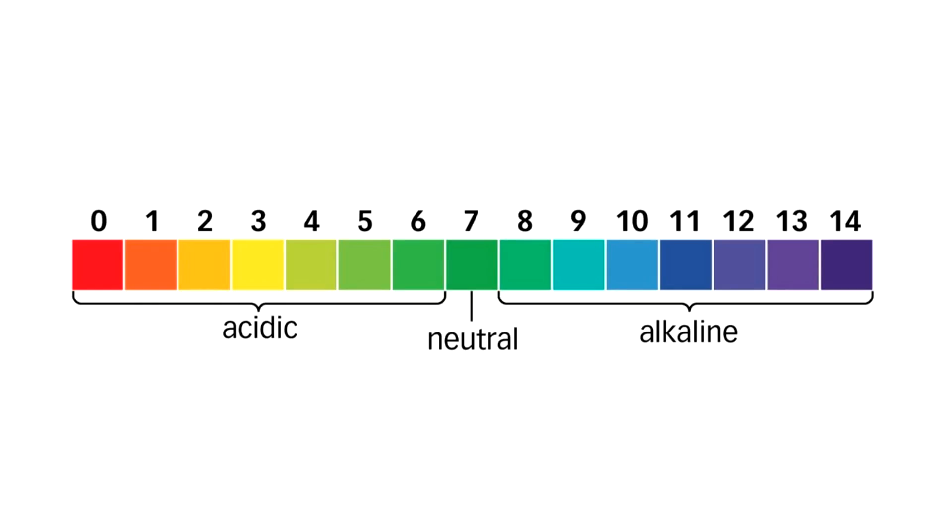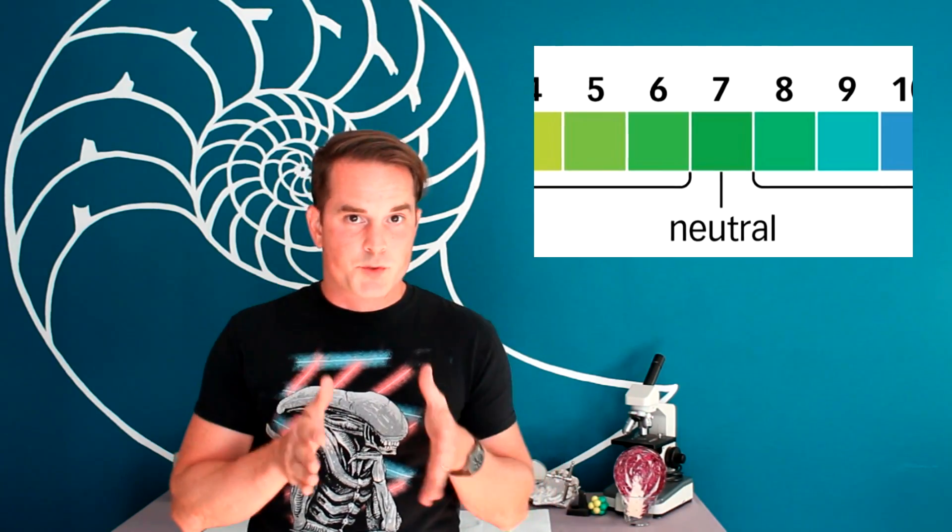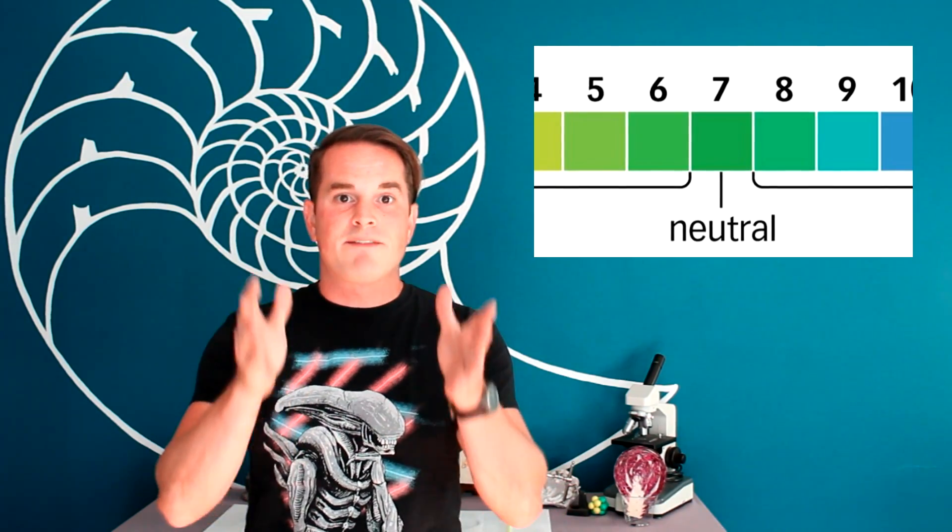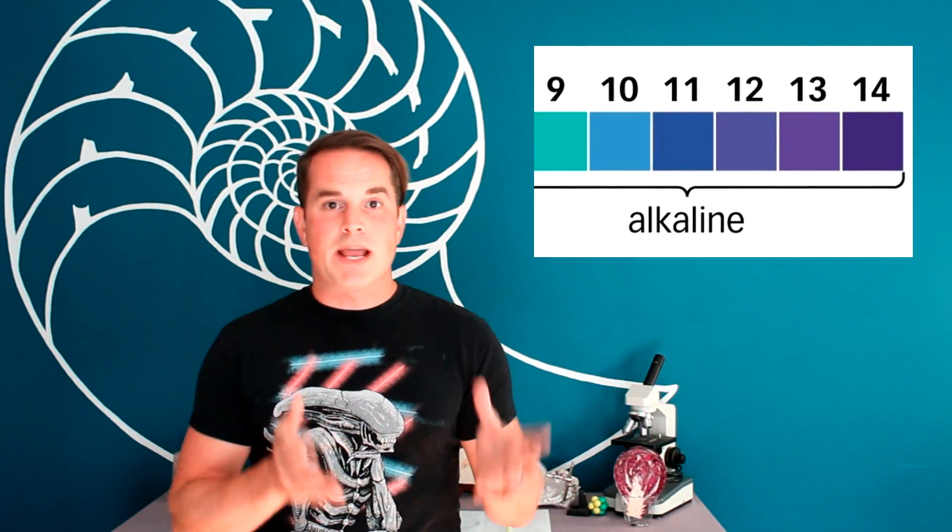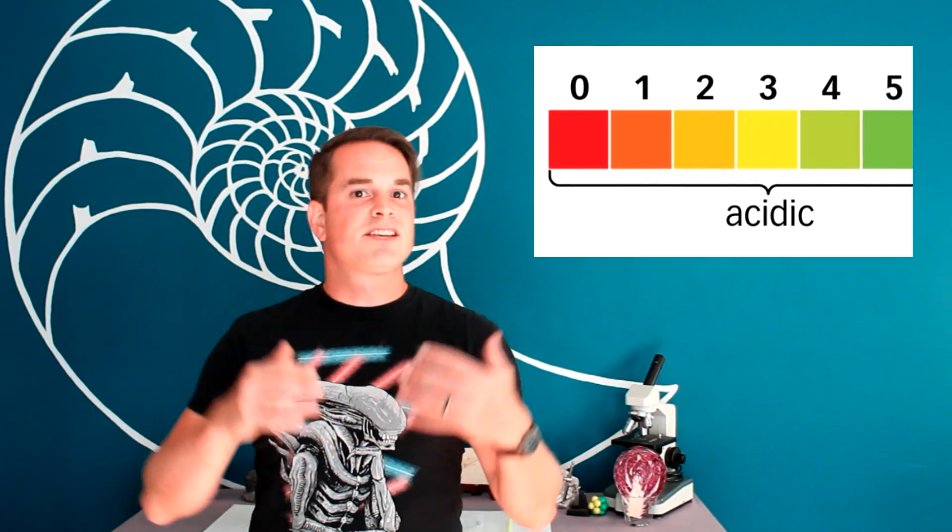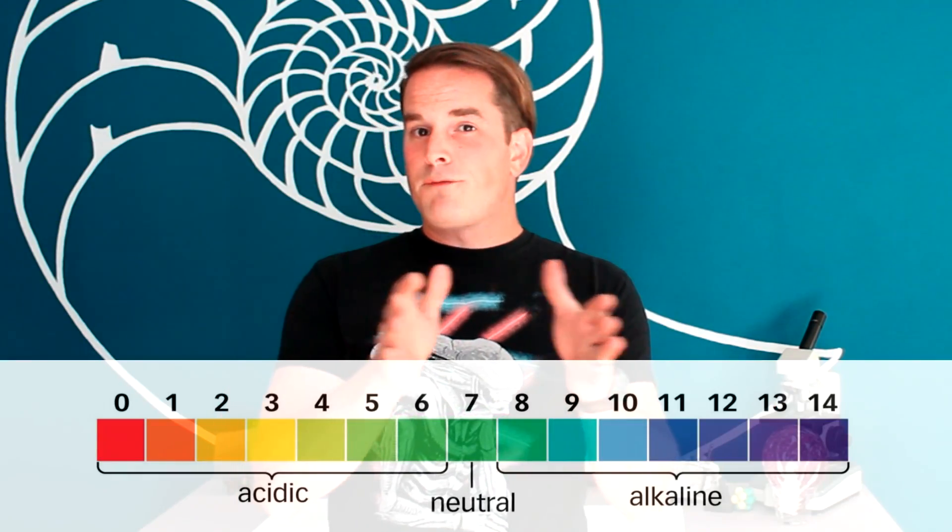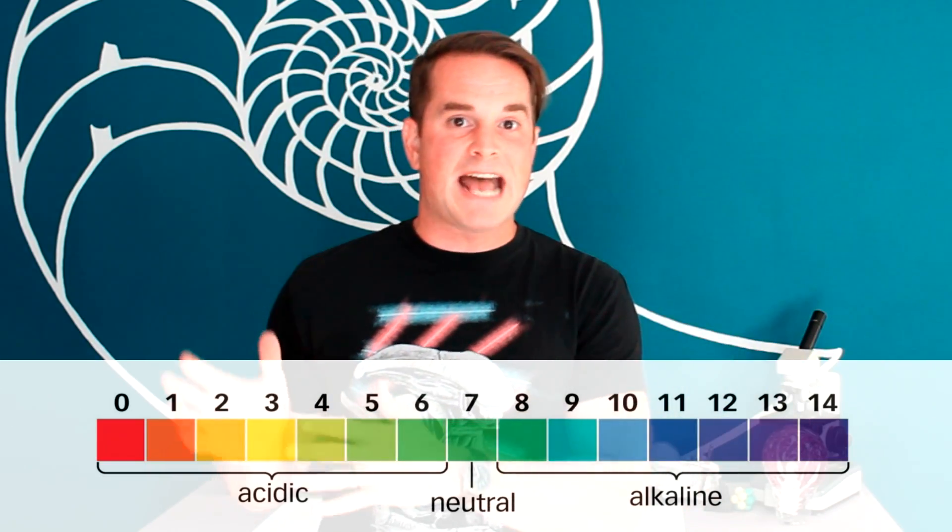pH is a measured value in chemistry that can tell you how acidic or how basic a solution is. 7 on the pH scale is neutral. Something like pure water would have a neutral 7 for pH. Anything above 7 is considered a basic or alkaline solution. And anything less than 7 is considered to be acidic. Also, the further that number is away from 7, the stronger the base or the acid is.